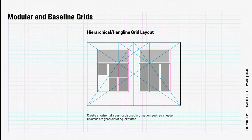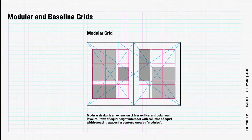Next we move on to hierarchical or hangline grids. These grids are great at creating a greater sense of structure. To make this grid, we add a row — a horizontal area to hold distinct information like a header or images and captions. Note that in hierarchical grids, columns are generally of equal widths. Now we move on to modular design.